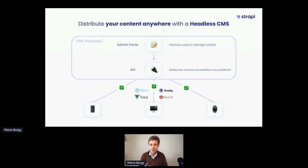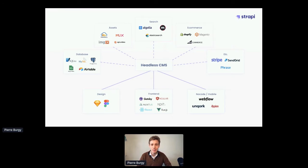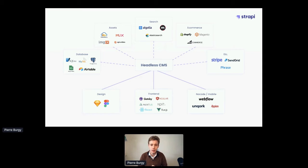This API makes the content available to any platform — that's how APIs unleash the power of content. A headless CMS is really at the heart of an entire ecosystem. It will be connected to databases like SQLite or Postgres, but even Google Sheets or Airtable. You can also connect it to an asset management system like Cloudinary to upload your assets, and synchronize content with a search engine like Algolia, Elasticsearch, or Swiftype. All of this is only possible using APIs.